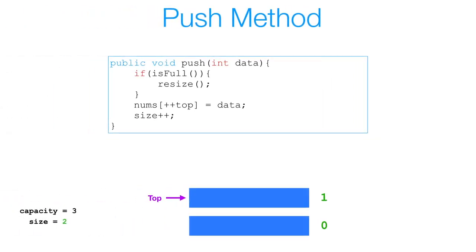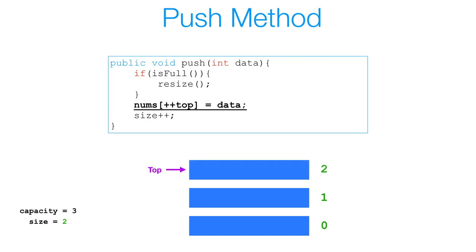Now let's see what the push method looks like. We take in some data, and we're going to add that data to the top of our stack. The first thing we'd want to do is check if our stack is full. If our stack is full, we cannot just add that element to the top because we don't have space, and in that case we'd have to resize our stack. However, if our stack is not full, we simply increment our top index by 1, add our data to the top of our stack at index 2, and then increment the size of our stack to 3. I'll also be going over the isFull and resize methods later in this video.